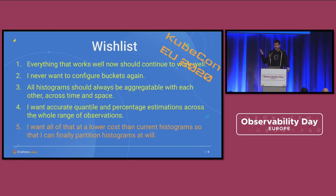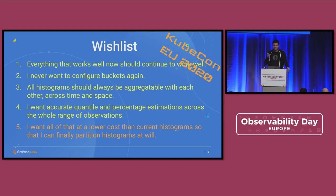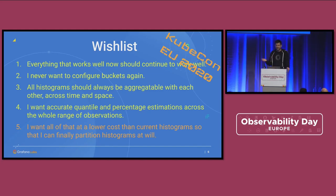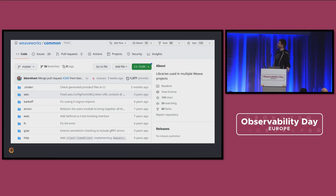Partitioning of histograms — the old classic histograms — was something nobody wanted to do because the histograms were so expensive that you don't want to add labels and multiply the problems. Now we want to see if this works with native histograms. Comparisons are almost impossible because reconstructing the exact use case of a classic histogram with native histograms misses the point of all the yellow wishes. And if you use native histograms to fulfill all the yellow wishes, everything blows up with classic histograms immediately because they're too expensive. So I went down a more pragmatic path.